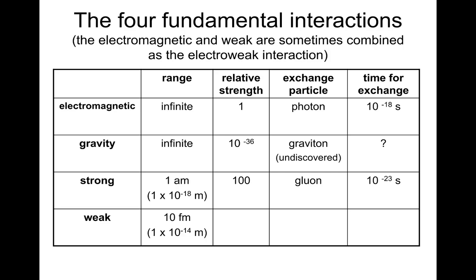The last one — weak force. Range is about 1 times 10 to the minus 14 meters. Relative strength is 10 to the minus 3, so weaker than the electromagnetic and a lot weaker than the strong force. The interaction bosons are W plus, W minus, and Z. Time for exchange is about 10 to the minus 10 or longer. The time for exchange doesn't really come up in the exam, but exchange particles and relative strength you definitely should know, and range you should definitely be aware of.